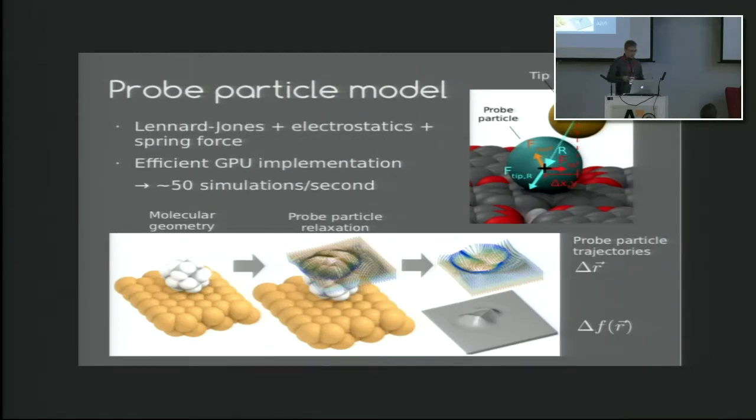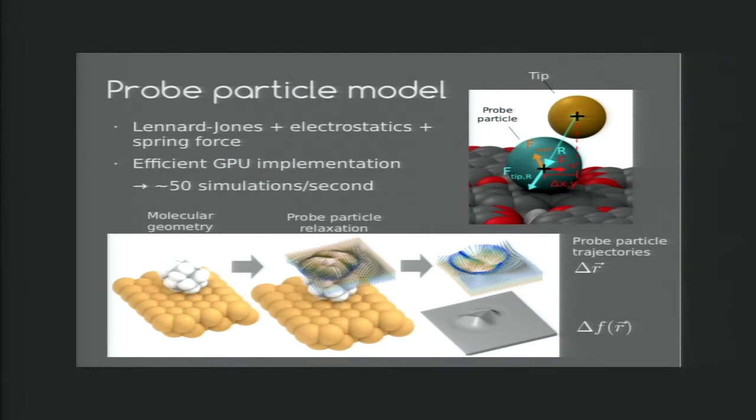Another problem in terms of machine learning with AFM is that it's incredibly costly in terms of time. It might take a full day to get a good image. So instead, we simulate the AFM imaging process. Our model is one where this probe particle interacts with the sample through a Lennard-Jones potential plus an electrostatic potential, and then it interacts with the tip through a spring force.